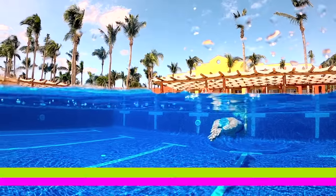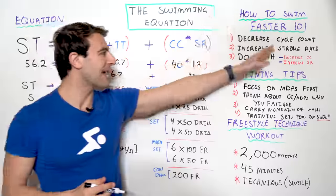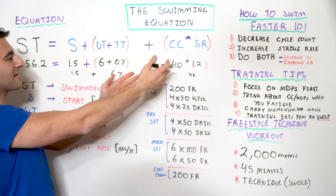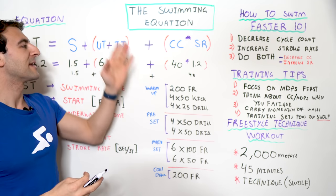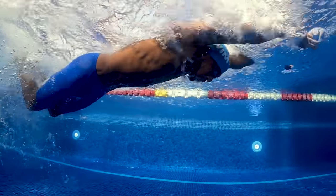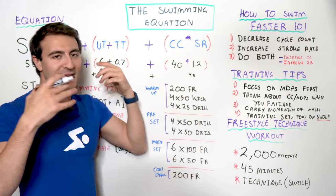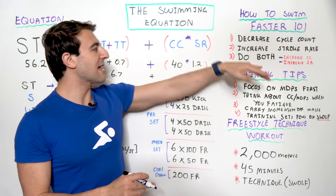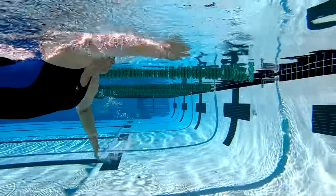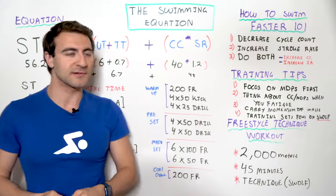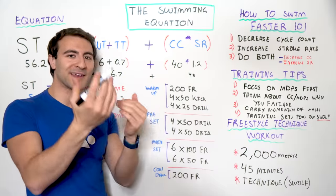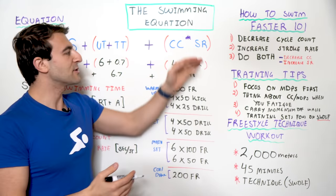The third way you get faster is you do both of these simultaneously — you decrease your cycle count and increase your stroke rate. So you go from 40 to 39 strokes and from 1.2 to 1.15 seconds per stroke. If you do that in this equation, you're going to end up going 55 seconds — even faster. The challenge is this is the hardest version to work on. If you rate them in difficulty: hard is decreasing cycle count by taking fewer strokes and focusing on max distance per stroke. Harder is increasing your stroke rate while maintaining the same number of strokes. And the hardest version is to do both, because of the way these are inversely related to each other.